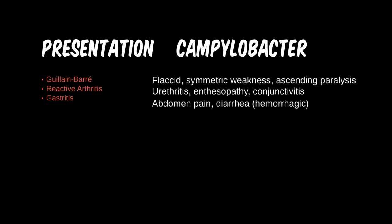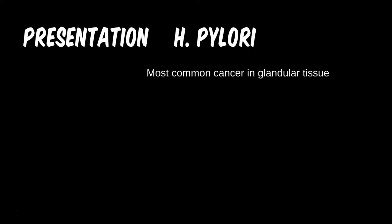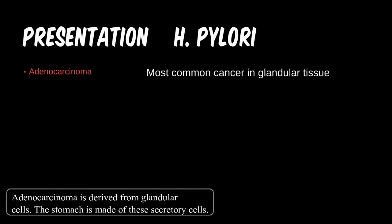We know the main symptoms of diseases of H. pylori now, but do you know the prevalence of each? Which is the most common cancer from H. pylori? Adenocarcinoma can be found in the stomach and intestines of people with chronic diseases from H. pylori origin, such as ulcers.